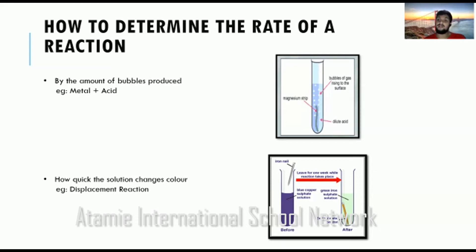The rate at which bubbles are produced allows you to determine the rate of that particular reaction. If you take a very reactive metal and react it with a strong acid, you will see a lot of bubbles being produced in a short span of time. If the bubbles are produced at a higher rate, that means the rate of the reaction is very high. If the bubbles are produced at a lower rate, that means the rate of the reaction is slow.